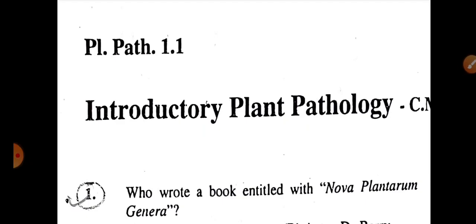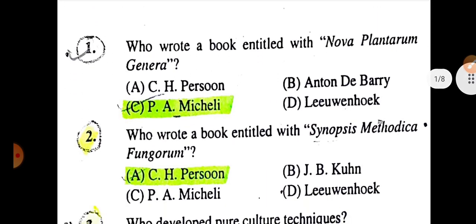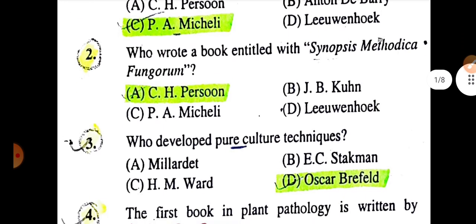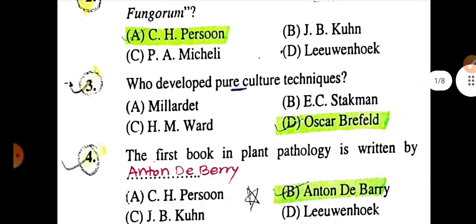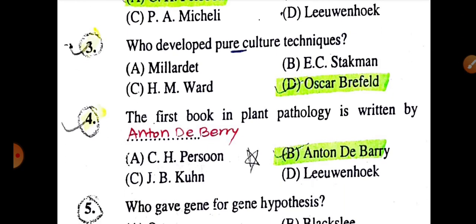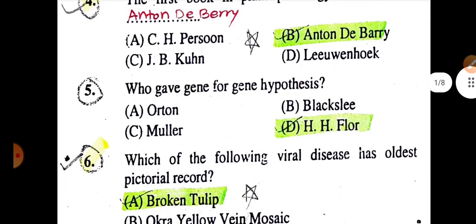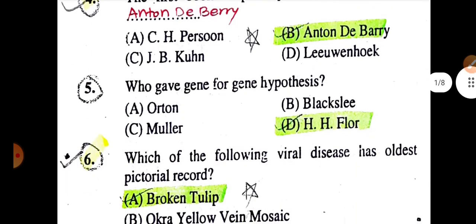This is the 16th part of the Key to Success in Agriculture MCQ book series, and the first part of Plant Pathology. Who wrote the book entitled 'Nova Plantarum Genera'? Answer: P.A. Michelli. Who wrote 'Synopsis Methodica Fungorum'? Answer: C.H. Pierson. Who developed the pure culture technique? Answer: Oscar Brefeld. The first book in plant pathology was written by Anton de Bary.